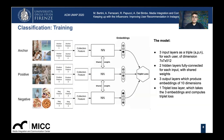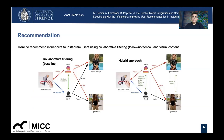Our idea is to create a compact representation using triplet loss and deep learning of the content of the images, and use the learned embeddings to represent the content of the Influencers.